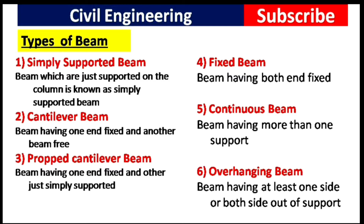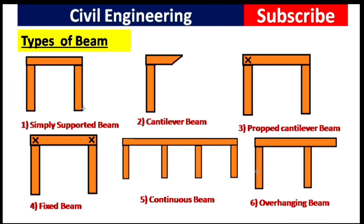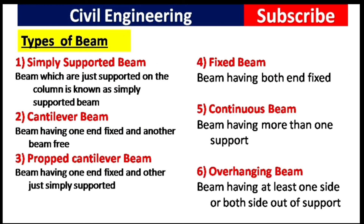The next beam is the fixed beam. A beam having both ends fixed is known as a fixed beam. As you can see in this picture, both ends of the beam are fixed with some mechanism, and this type of beam is known as a fixed beam.